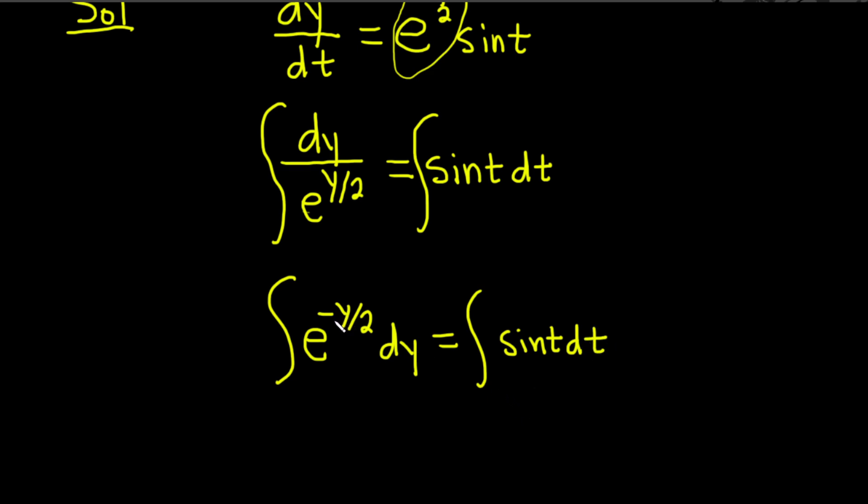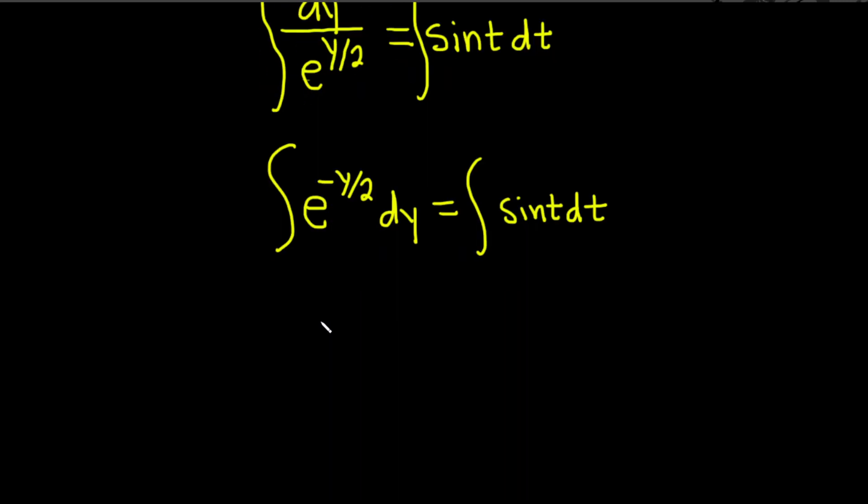So there is a trick to integrate this. You could make a u substitution. Yeah let's go ahead and make the u substitution. But there is a trick. So the trick is basically to memorize the formula. So I'm going to let u equal to negative y over 2.